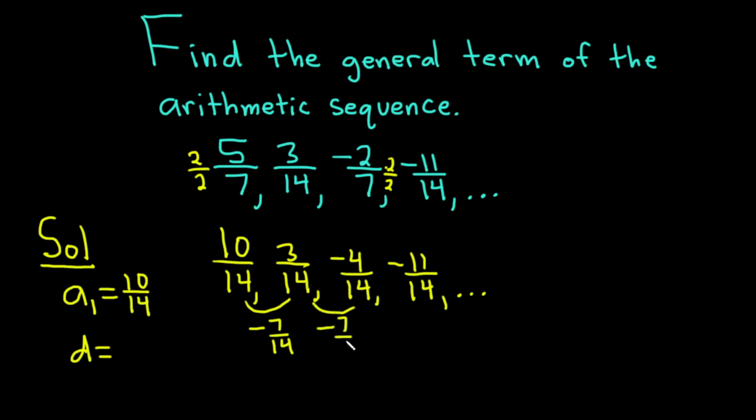Same thing here, negative 4 over 14 to negative 11 over 14, we're adding negative 7 over 14. The little d is going to be negative 7 over 14.